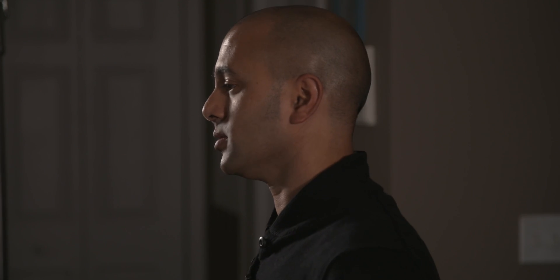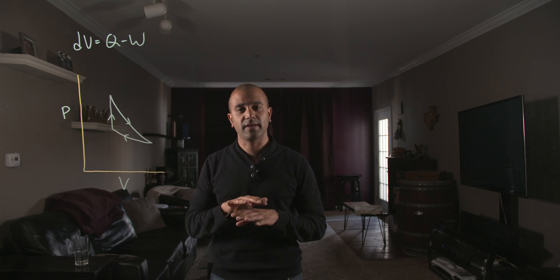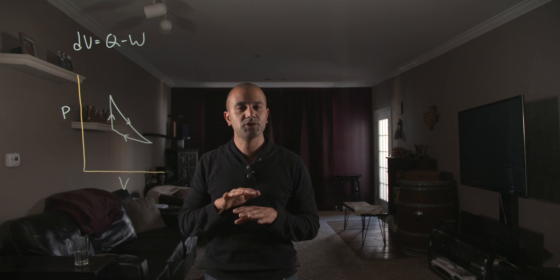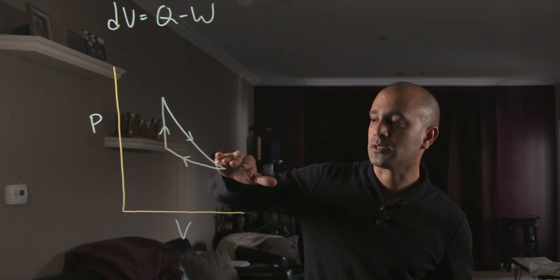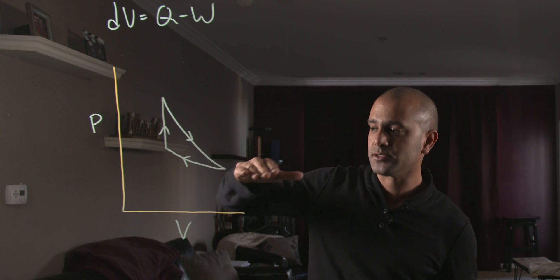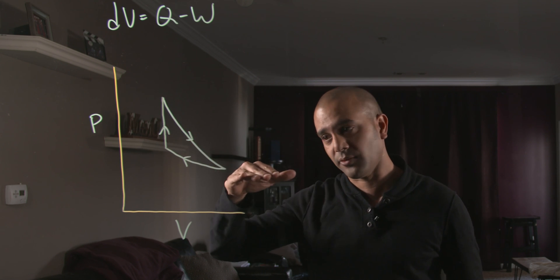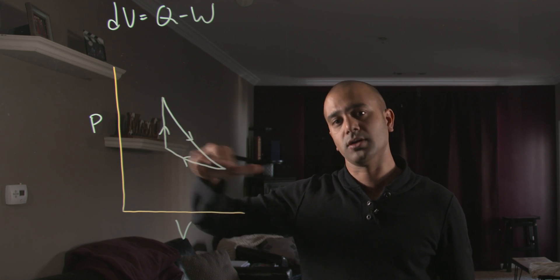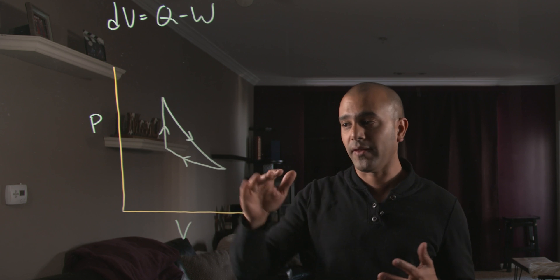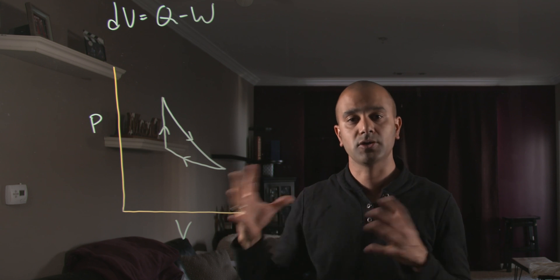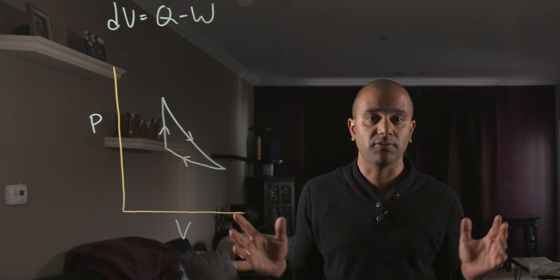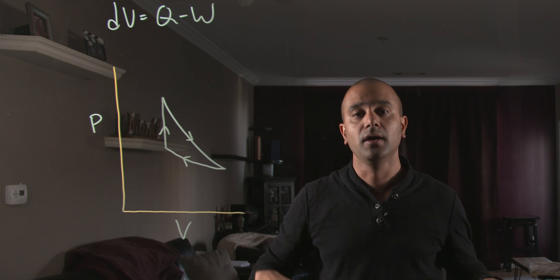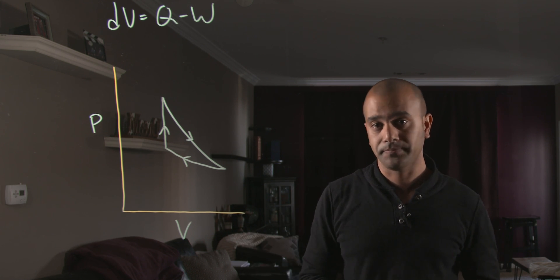The second leg is an isothermal compression. Isotherms are characterized by the fact that the temperature is constant — isothermal means single temperature. Isotherms also sweep down into the right and up into the left like adiabats, but they rise a little more gently. It's important to understand why they rise more gently in terms of the gas itself, and that's a topic I'm going to table for the follow-up conceptual video linked in the description.